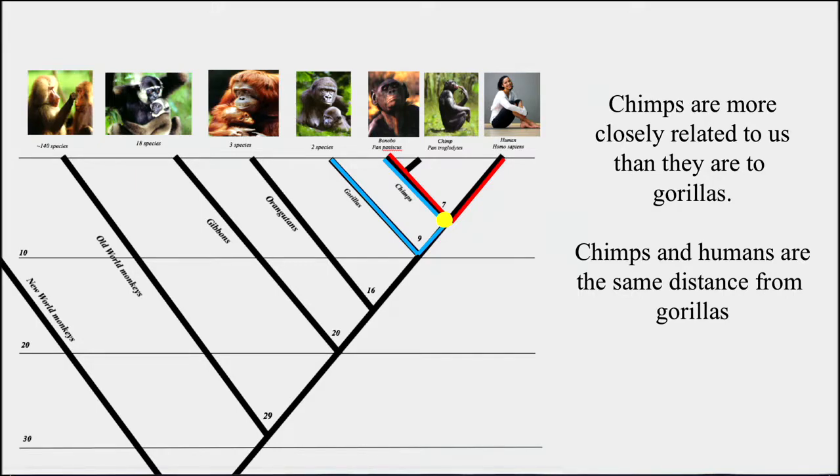Chimps, pan troglodytes, they are not our ancestors, they are our cousins, they are our closest relatives on earth. And if our closest relatives in the universe are here on earth, chimps are our closest relatives in the universe.